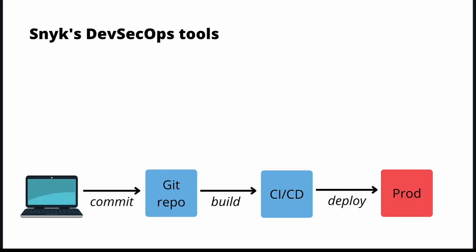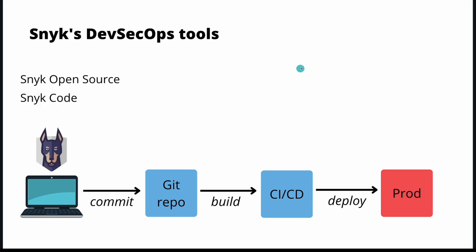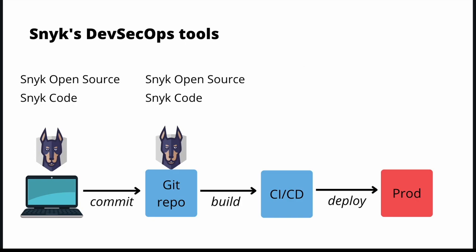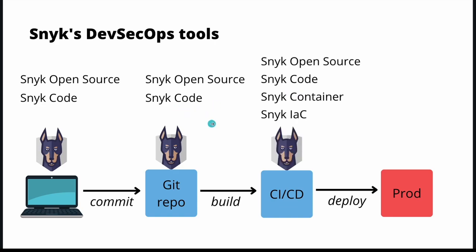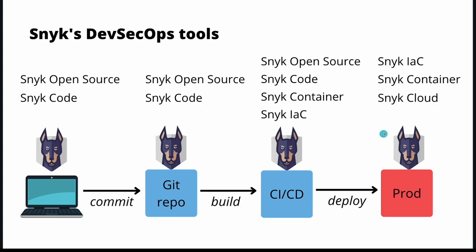What tools does the Snyk platform provide to facilitate DevSecOps at every stage of our development journey? On your local machine, you can use tools like Snyk Open Source and Snyk Code. The same tools can be integrated into Git repositories hosted on GitHub, GitLab, or Bitbucket to execute checks at that level. Then in the CI/CD pipeline you may have Snyk Open Source, Snyk Code, Snyk Container, and Snyk IaC. On production, you may also use Snyk Cloud, Snyk Container, and Snyk IaC — which is Infrastructure as Code. In modern development, using code to manage your infrastructure is very common.